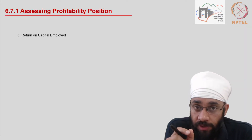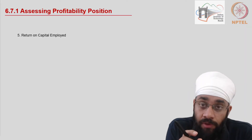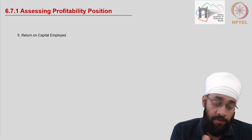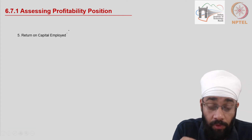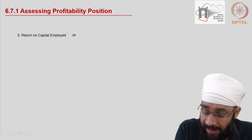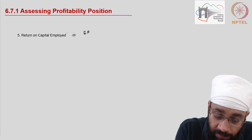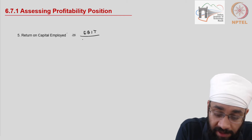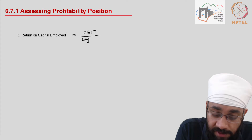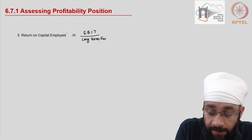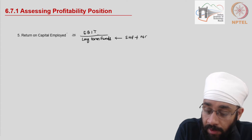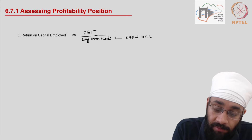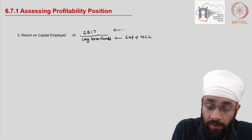This is a continuation of the tutorial on calculation of profitability ratios. We are now going to take the fifth indicator, which is Return on Capital Employed (ROCE). It can be calculated by taking Earnings Before Interest and Taxes (EBIT) and dividing it by the long-term funds in the business. Long-term funds are equal to shareholder funds plus non-current liabilities, and EBIT can be picked up directly from the income statement.